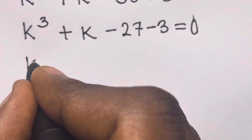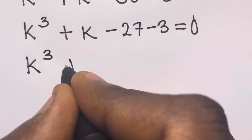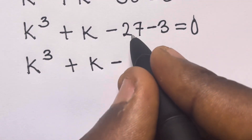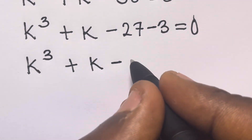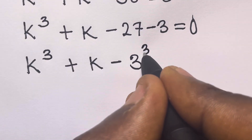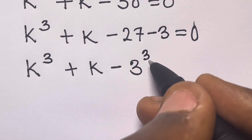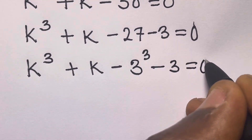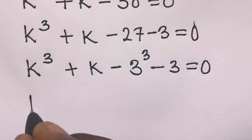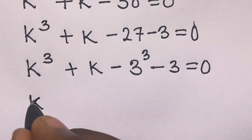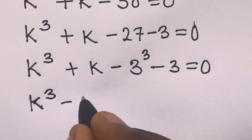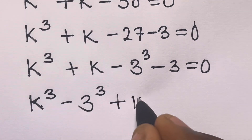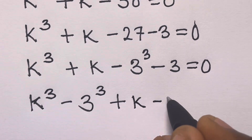We can express 27 as 3 raised to the power of 3. So we rewrite the equation as k to the power 3 minus 3 to the power 3, plus k minus 3 equals zero.